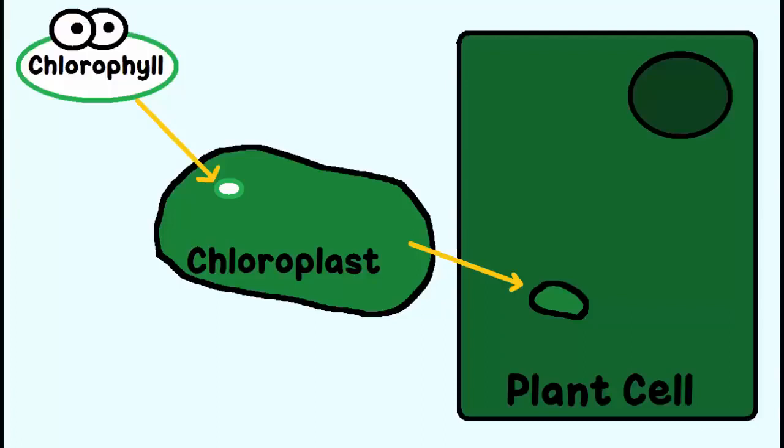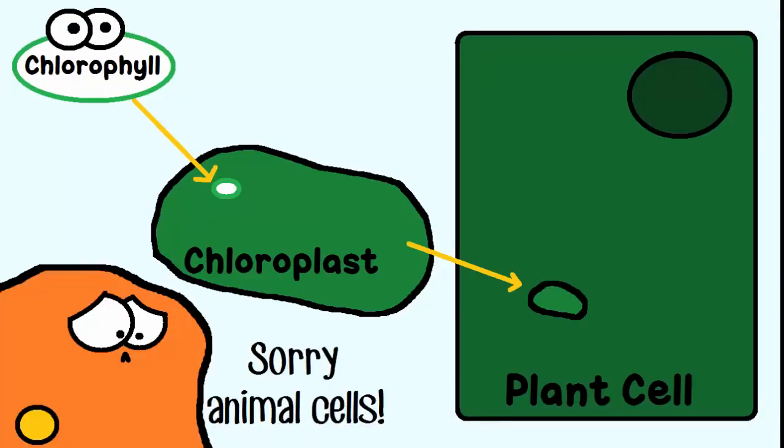Chlorophyll is a pigment found in the chloroplast of plant cells. Convenient, they sound similar. This amazing organelle is not found in animal cells.